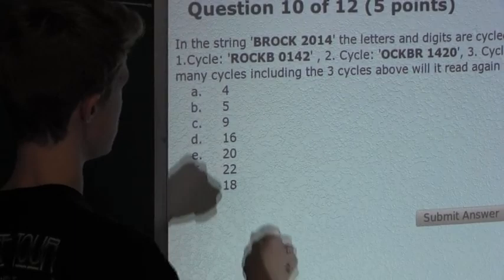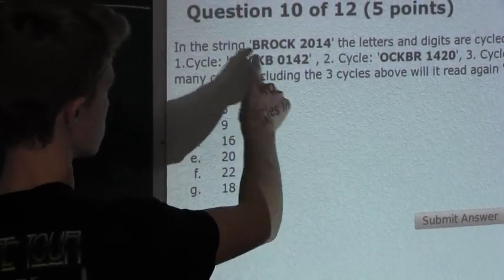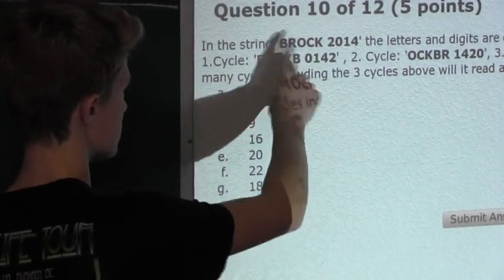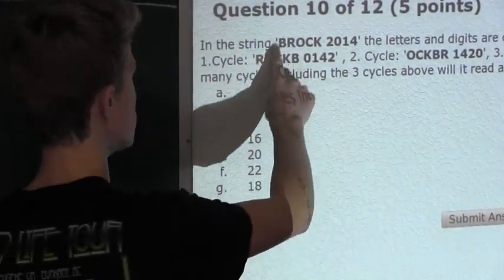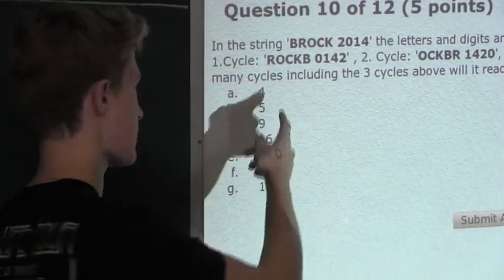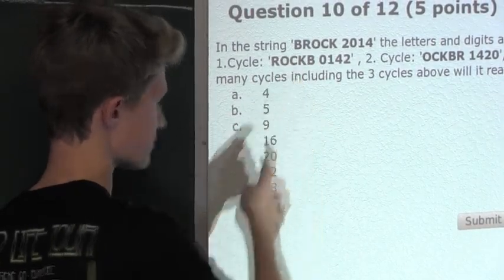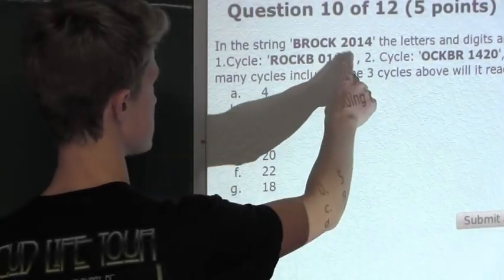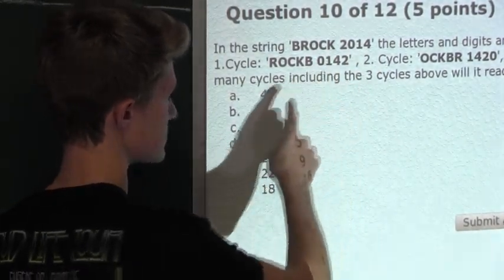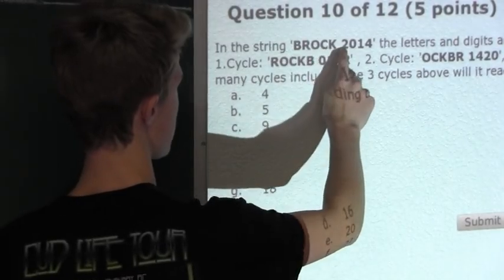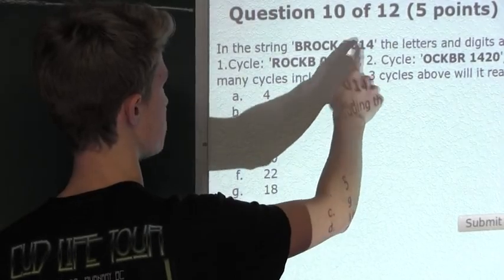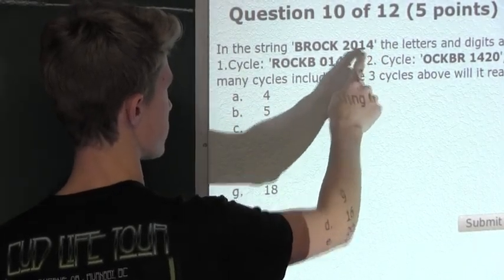Alright, so this means for the string to read BROCK again, we would always need either 5 or another 5 just for these letters to keep on rotating to get BROCK again. So these are called multiples because you're always adding by the same number, which in this case is 5. Now for the digits, there are 4 digits. And again, they only rotate by 1, so that means for every 4 you would have 2014 again. So those would be multiples of 4 because you're always adding up by 4 each time to get 2014 again.